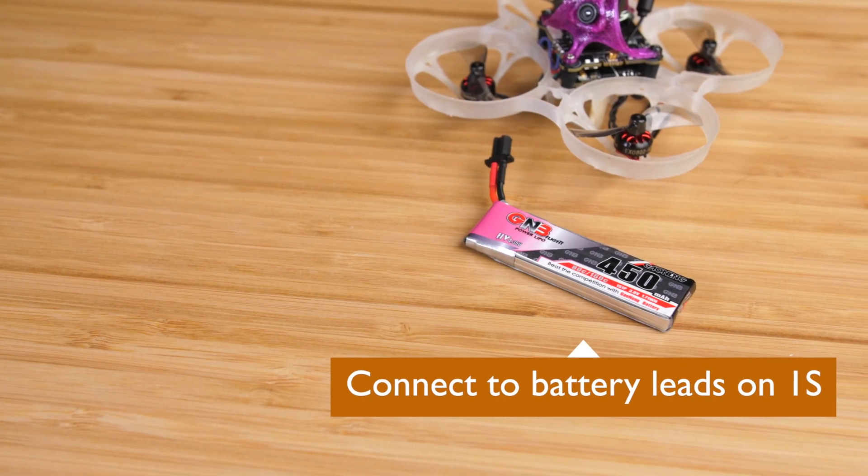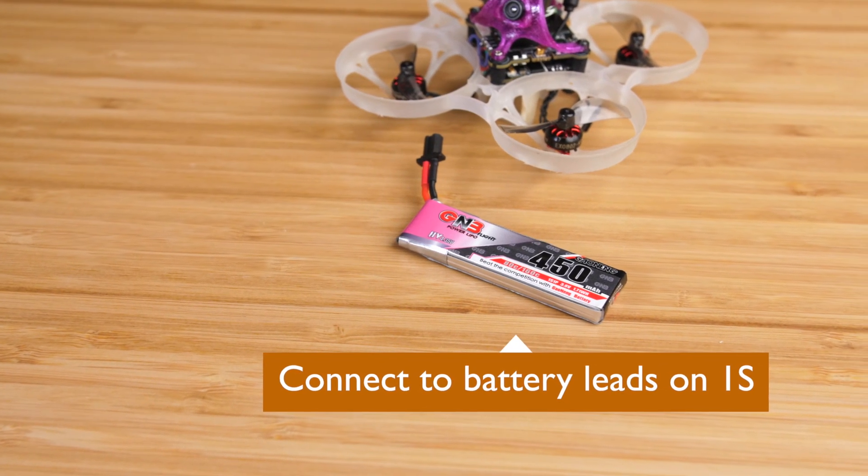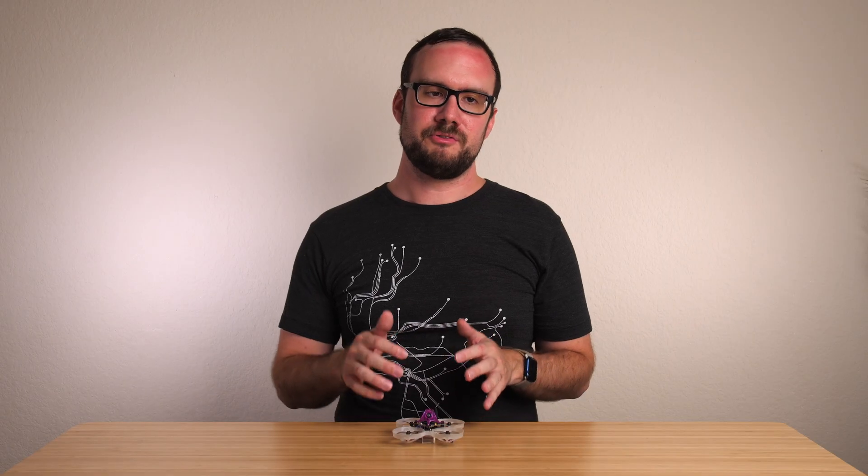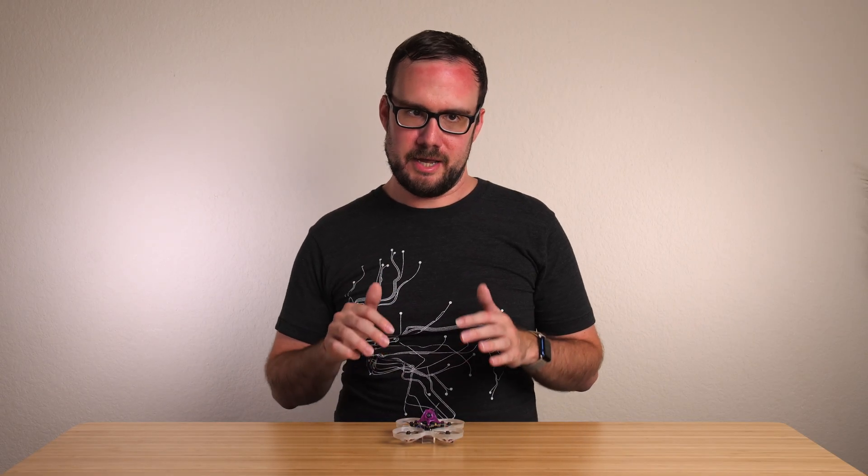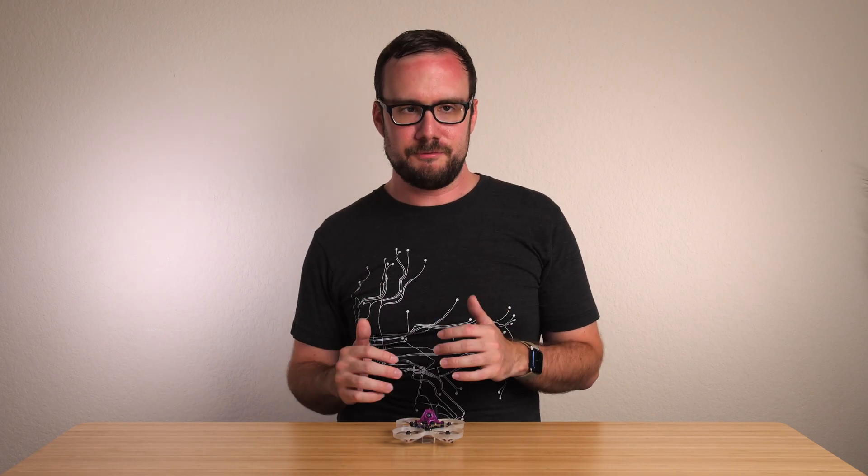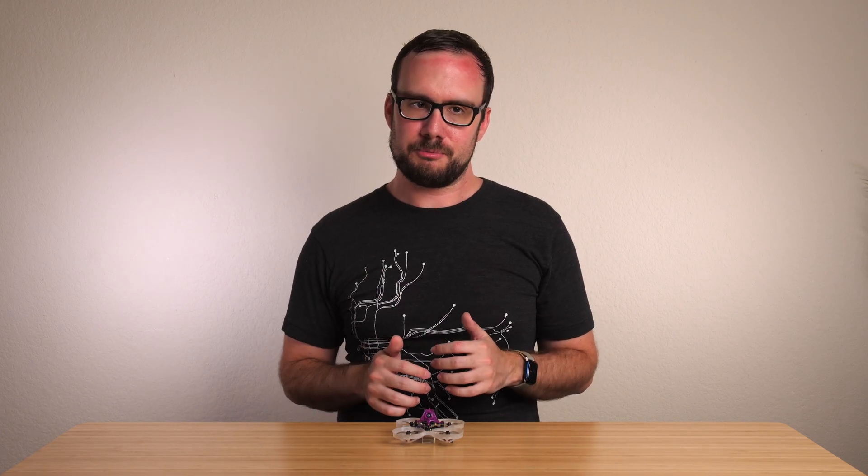Now on a 1S drone you probably are going to need to connect this VTX directly to the battery leads. That's because this VTX is going to pull over an amp at the full output power at 5 volts and a lot of flight controllers that are made for 1S drones can't supply that much current on the 5 volt pad. But for larger drones I think the 5 volt is a great option.